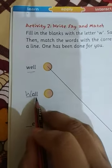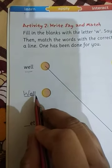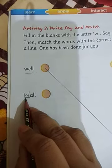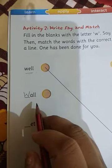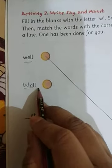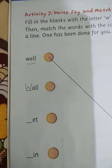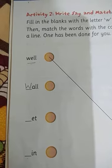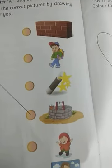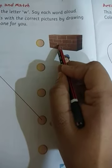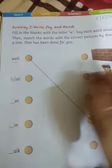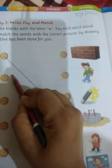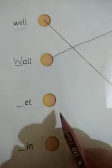Now, read it aloud. W-A-L-L. Wall. Wall means, do you all know what the meaning of wall? Wall means diwaal. Now, tell me where is wall? Is this wall? Yes. So, you have to match wall like this.